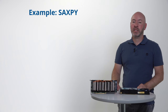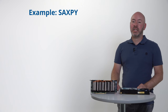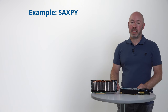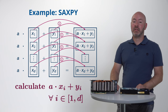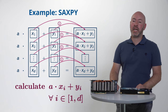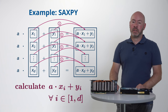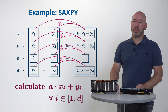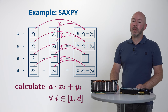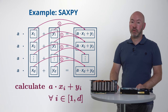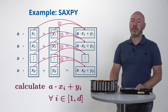Each entry can be calculated independently from any other entry. A parallel algorithm attempts to calculate all entries at once, which is much better suited if a large number of ALUs is available. However, the number of available ALUs is usually smaller than the entries of the vector, even on the GPU.